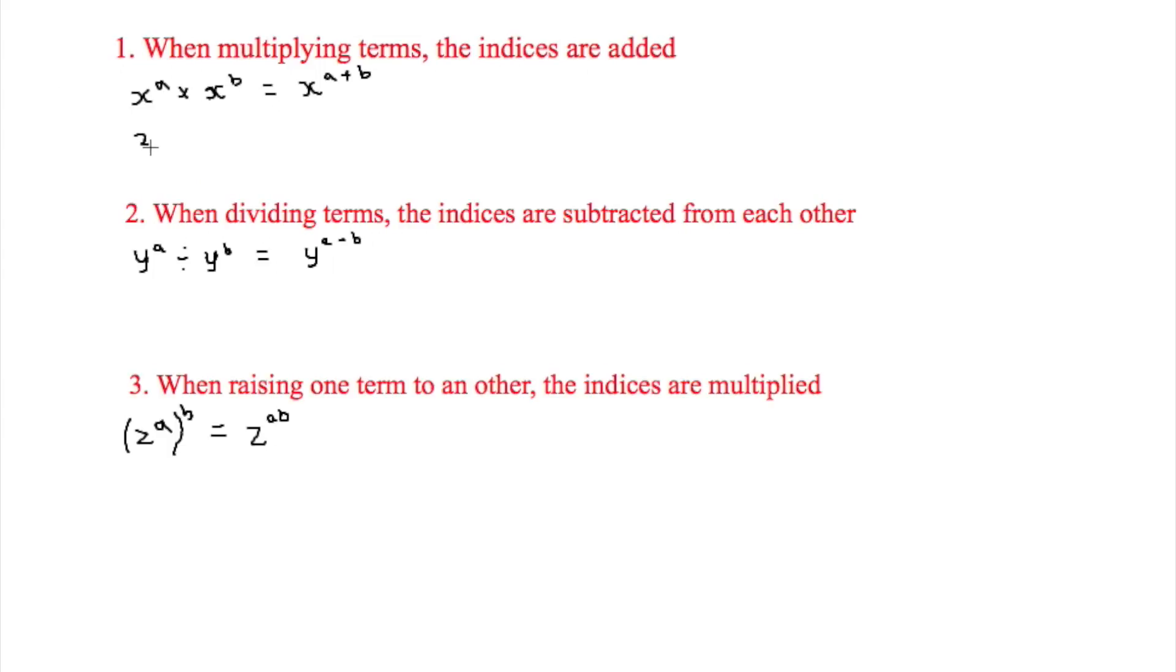Now we will add some numbers in here and see how that looks. So if we do 3x to the 2 times by 4x to the 5. Now we will end up by you times the first two. So you times 3 times 4 as you normally would which is 12. Then you put the x in there and then you add the indices. So the indices are 2 and 5. So you add them which equals 7 and there is your answer 12x to the 7.